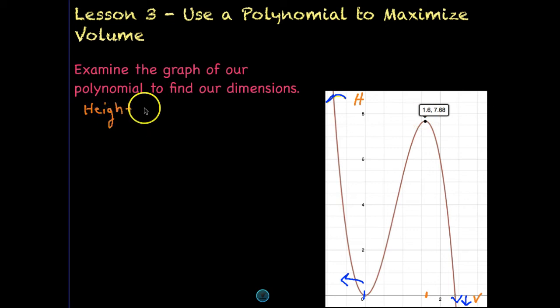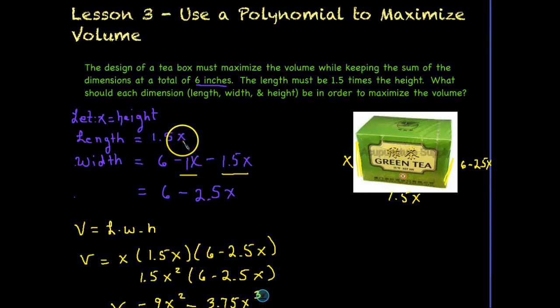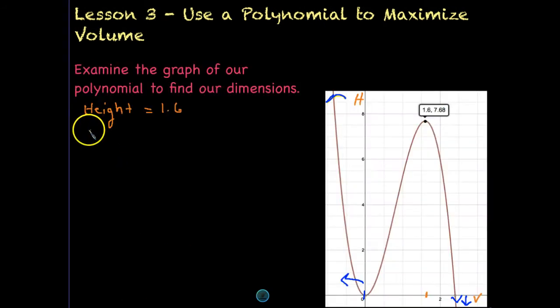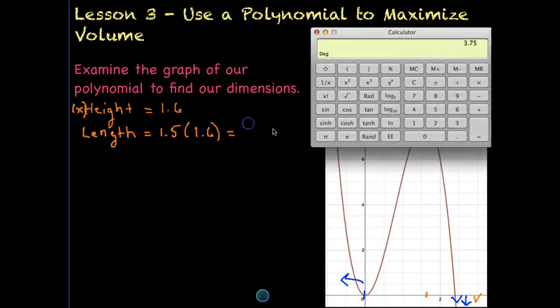Now let's go back and look at what we called our length and our width. So our length is 1.5 times our height. So we can come over here and we can write our length as 1.5 times x. And remember that x is our height. So times 1.6. We can solve to get that. 2.4.